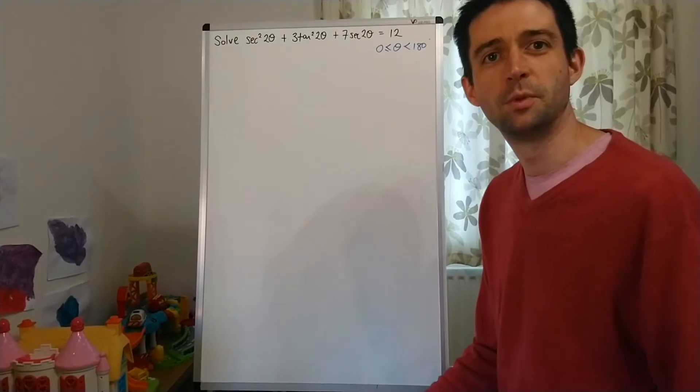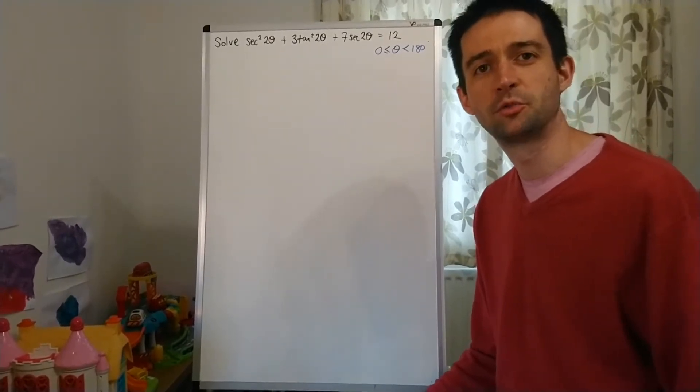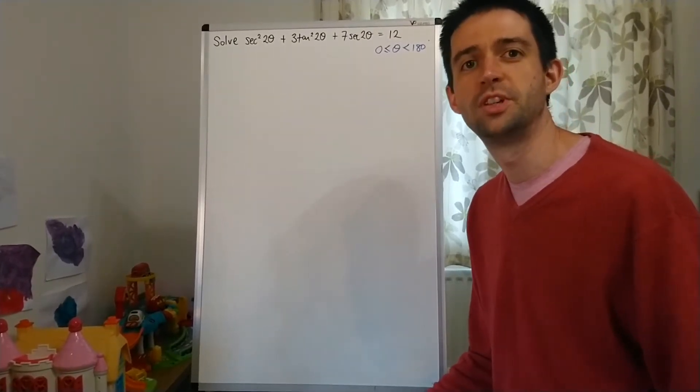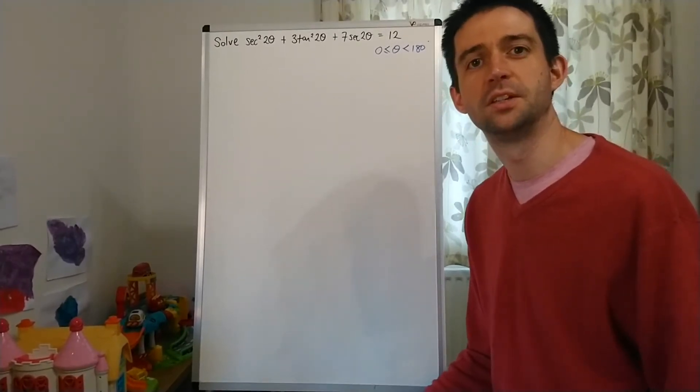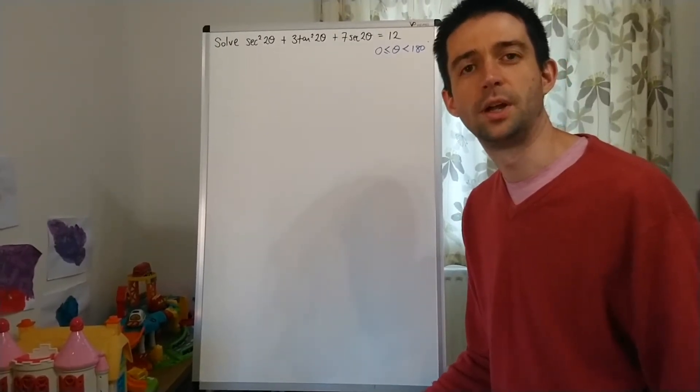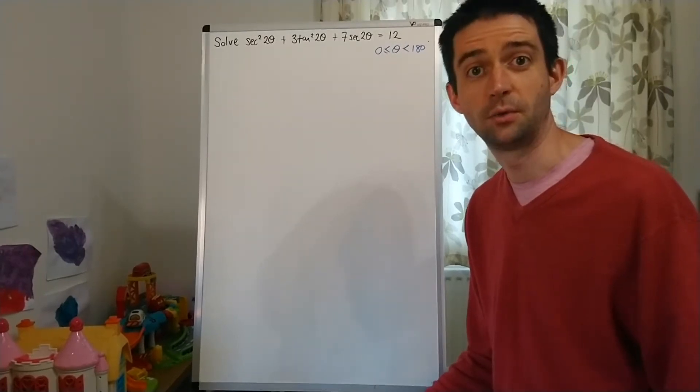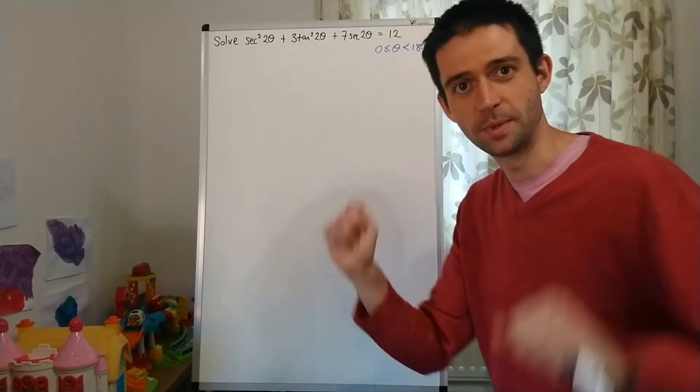Welcome back to Maths in an Empty Classroom with me, Mr. Southern. This is part three of the second lesson on reciprocal trig functions, and in this video I'm going to be going through a second example of solving an equation using one of the Pythagorean identities, the squarely swappies.